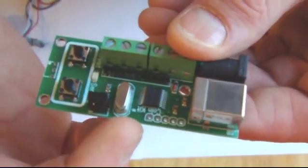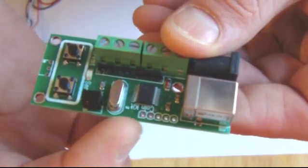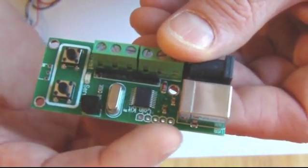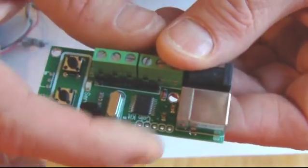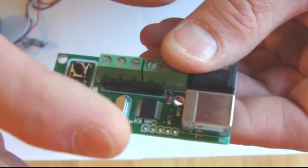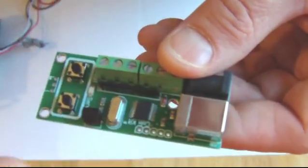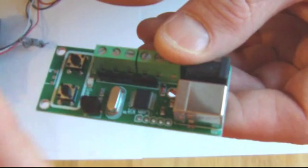There are some connections along the edge of the board here. You shouldn't connect anything to those at all. They're not for connecting. Those are just the ones we use to program the board. You won't need to connect or solder anything to those. Those are not used.